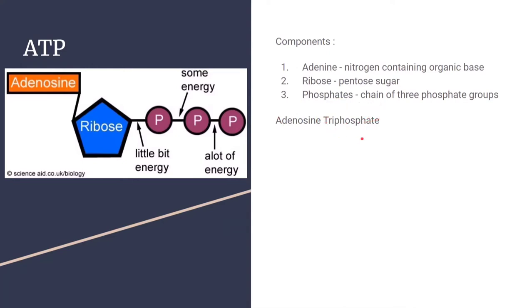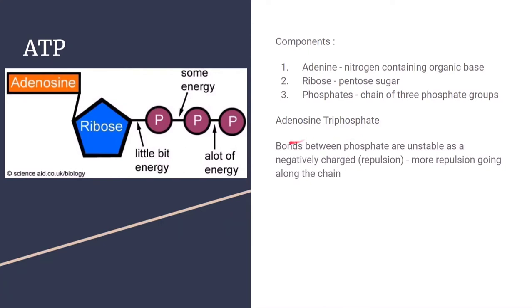The bonds between these phosphates are unstable because each phosphate group is negatively charged, so they repel each other. As you go along the chain, there is more repulsion and it gets stronger. These bonds therefore hold more energy — though when we say a lot of energy, it is only a lot relative to the other bonds, not a lot on the grand scale.